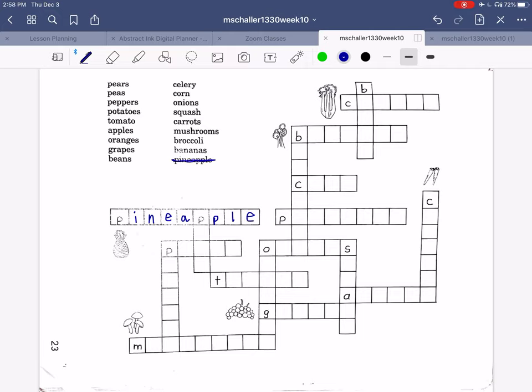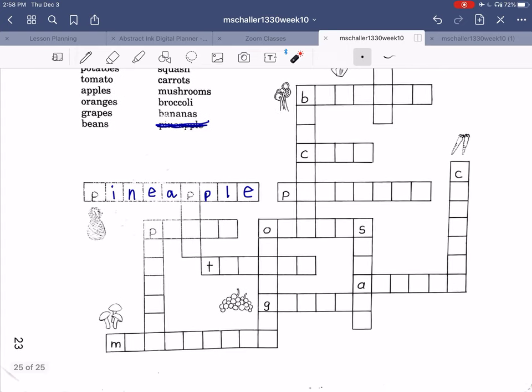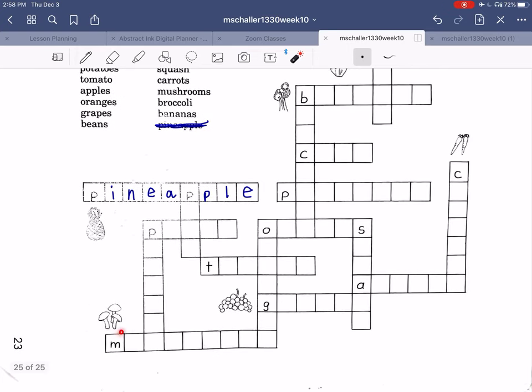Cross that off because it's finished. Now, let's see another picture. What is this one? This one is mushrooms. Mushrooms.